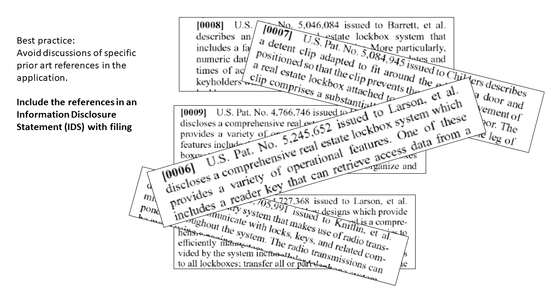Even though we're not going to describe all the references in our patent application, we do need to include them in an IDS — Information Disclosure Statement. This allows the patent office to consider and be aware of these references. And since you were aware of these references, you can make sure that your drawings, claims, and description highlight important differences and advantages over them without going into specific detail. Why are we so afraid of discussing prior art in detail? Because anything we say can be used against us by the examiner.